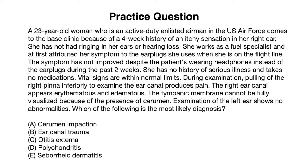Vital signs are normal. During examination, pulling of the right pinna inferiorly to examine the ear canal produces pain. The right ear canal appears erythematous and edematous. The tympanic membrane cannot be fully visualized because of the presence of cerumen. Examination of the left ear shows no abnormalities. Which of the following is the most likely diagnosis? This is a long question filled with a lot of information, not all of which you need to get to the diagnosis — so let's look at the key phrases.